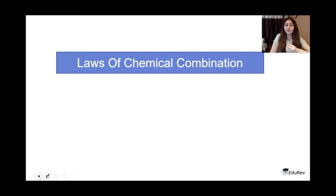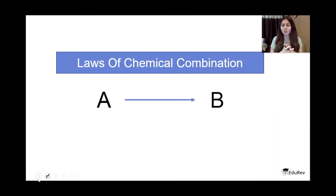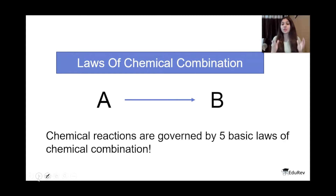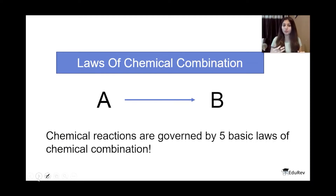Whenever we have a reaction in chemistry, a basic one is written as A converts to B, where A is the reactant and B is the product. When any chemical combination or chemical reaction takes place in chemistry, it happens with respect to certain laws. Those five laws are called the laws of chemical combination. Of course we can have a number of reactants and a number of products, but any chemical combination happens with respect to these laws of chemical combination.